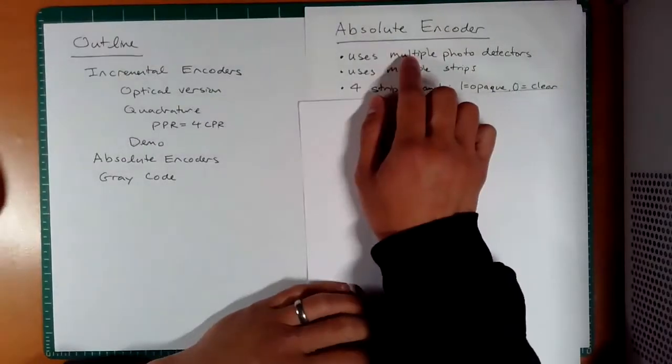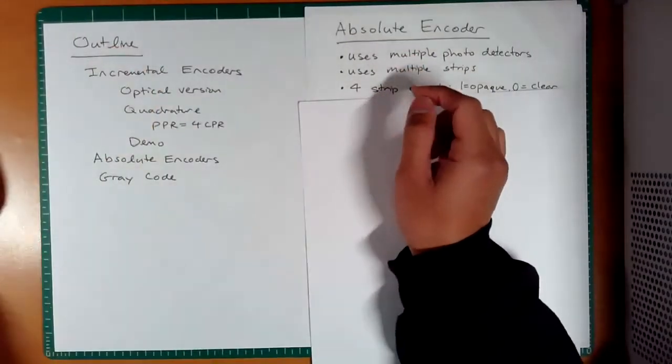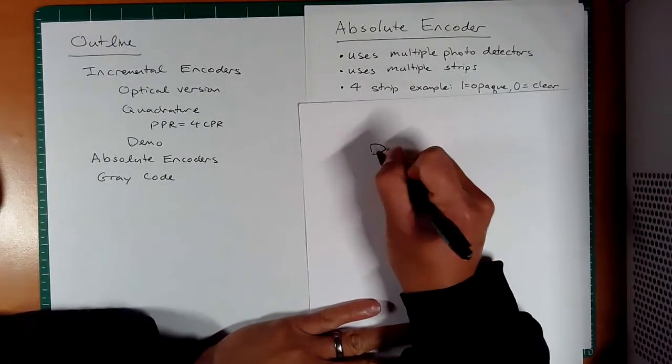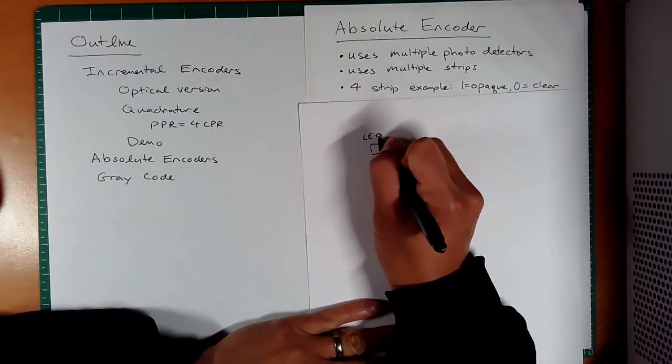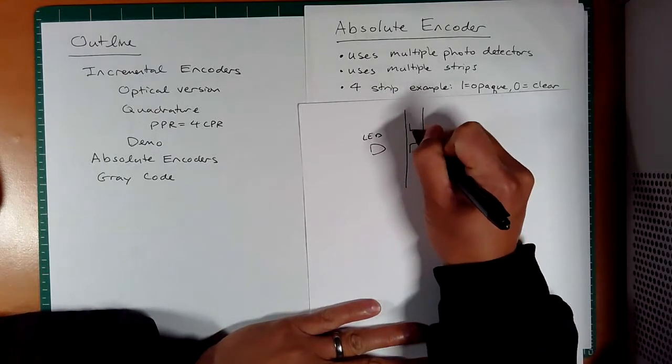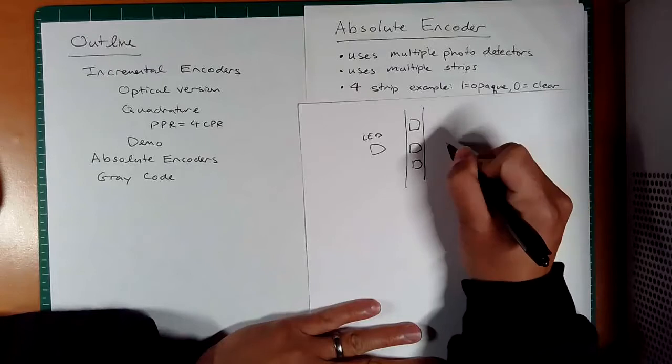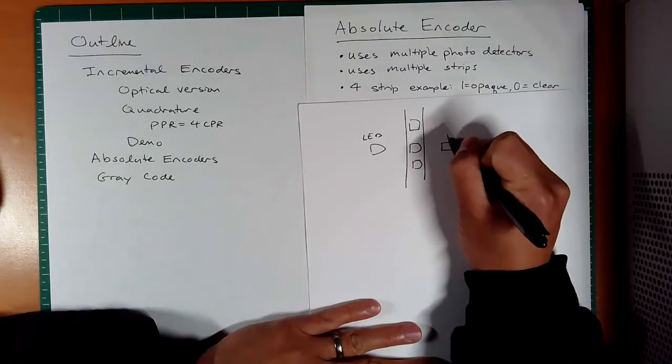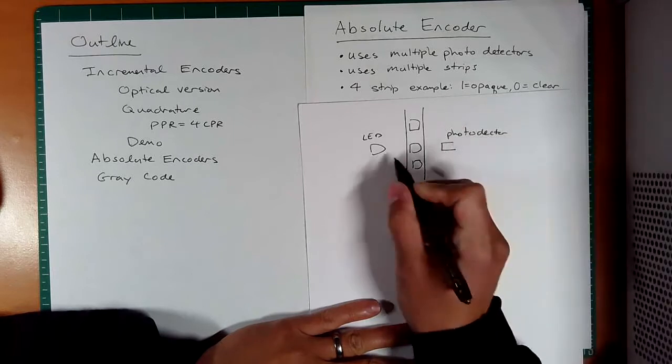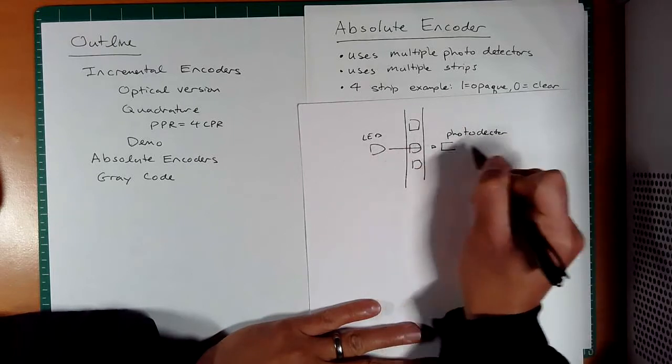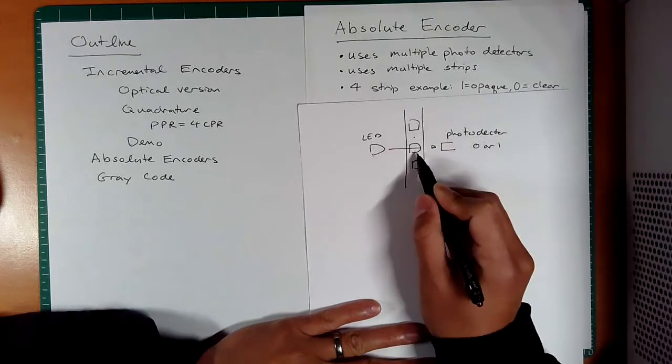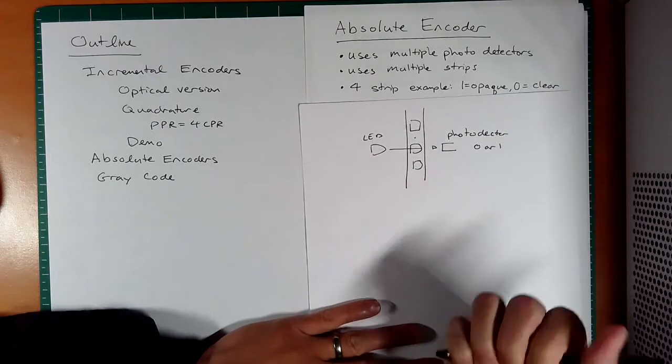Okay, so we just finished talking about incremental encoders, and the whole idea was that you had an LED, and we had a strip, and you had windows in the strip. And then you had over here a photo detector. And so you can imagine as light passes through, you're going to see a zero or one, depending on if the light is blocked or if the light can go through.